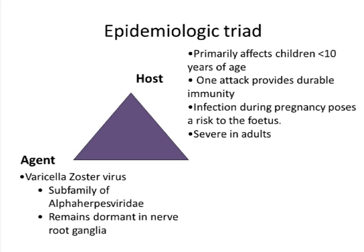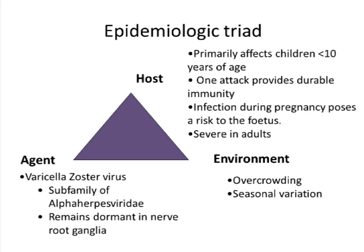The severity of the disease — in terms of rash appearance and other symptoms — is much greater if chickenpox is acquired in adulthood. Regarding environmental factors, overcrowding and seasonal variation are two important considerations. Overcrowding in poorly ventilated places allows transmission of the virus. In tropical areas, seasonal variation means that during cold periods when people stay indoors, the prevalence of infection increases.